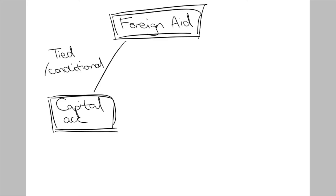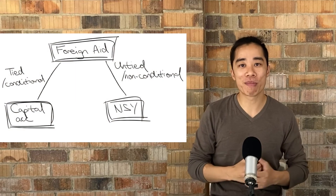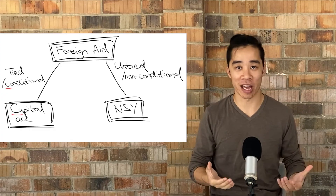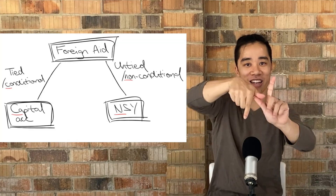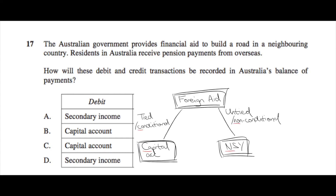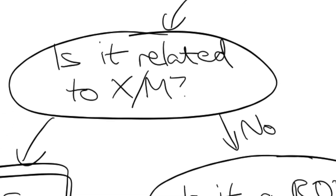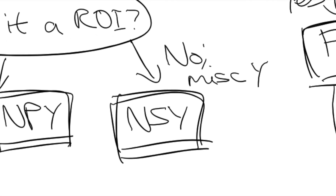While these rules will help you sort most transactions, there are some involving foreign aid that don't follow them. Foreign aid can be either tied or untied. Tied aid is often attached to a specific project or purpose, such as building a school or infrastructure in a developing country — aka conditional aid. Untied aid is not attached to any purpose; it's up to the government of the poorer country to decide how to spend it. A handy mnemonic: conditional aid (C) goes into the capital account, whereas non-conditional untied aid (N) goes into NSY. In 2019 HSC question 17: Australia sending foreign aid specifically to build a road is tied/conditional — therefore a debit in the capital account. Australia receiving pension payments is an earning in the current account, not related to exports or returns on investment, so pensions from foreign governments are a credit in NSY.